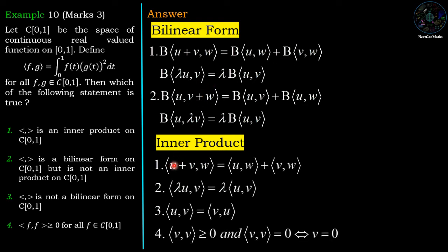Now for inner product: ⟨u+v, w⟩ = ⟨u,w⟩ + ⟨v,w⟩, and ⟨λu, v⟩ = λ⟨u,v⟩. Third condition: ⟨u,v⟩ = ⟨v,u⟩. And the fourth condition: ⟨v,v⟩ ≥ 0, and ⟨v,v⟩ = 0 implies v = 0. If this product satisfies these four conditions then it will become an inner product.